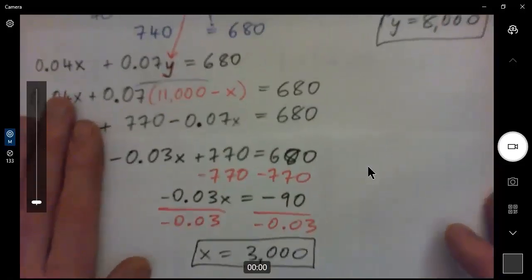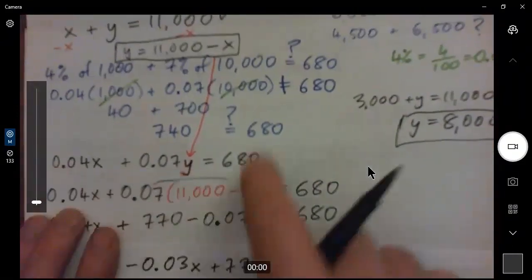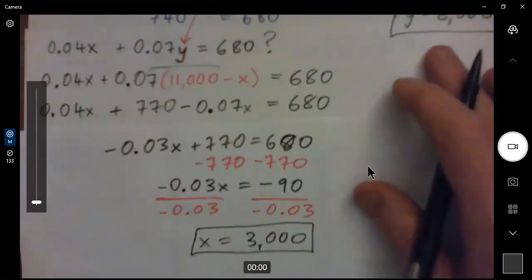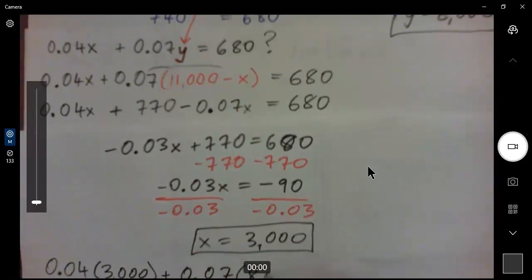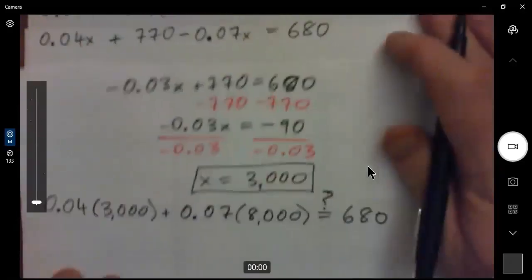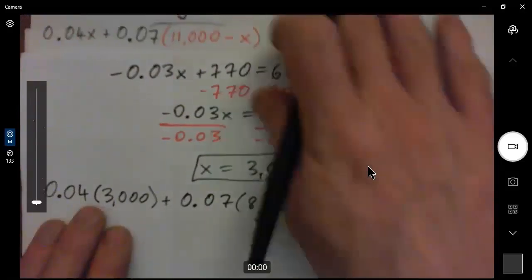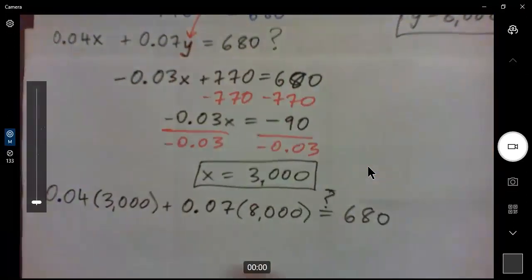So, there we go. Now, so they definitely add to 11,000. So, that equation works for sure. The question is, does this equation work, right? So, let's just check this equation. So, we're going to check that equation. So, we're going to go 0.04 times X was 3,000 times 3,000 plus 0.07 times Y. Y was 8,000. And see, is that, in fact, equal to 680? So, that's all. Try that out. So, we plug this into our little interest equation here. Remember the interest equation? The 0.04 X plus 0.07 Y equals 680. We're going to try it out now, right?